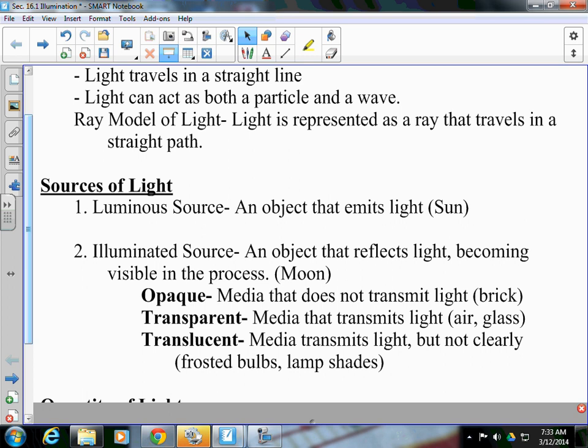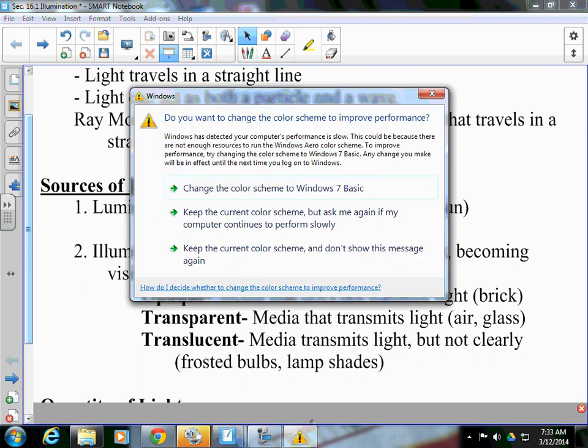And we have an illuminated source, an object that reflects light, becoming visible in the process, such as the moon. You see the moon all the time during the night. The moon is not giving off light. It's not a luminous source. It's being illuminated by the sun.